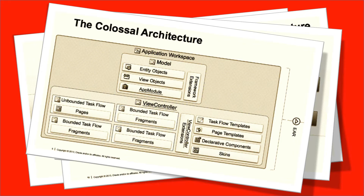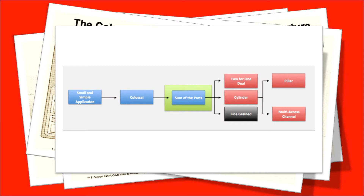In terms of the colossal pattern, it became colossal because we were adding many Bounded Taskflows to the overall application. What we're going to look at in today's particular episode is the Sum of the Parts Pattern, which really realizes the benefits of Bounded Taskflows but takes it up one further step — really uses one of the main benefits of BTFs that wasn't realized previously.